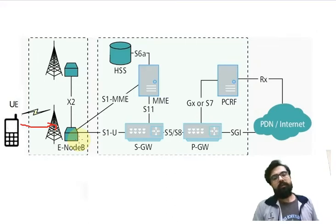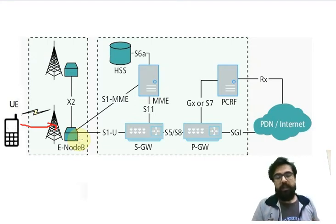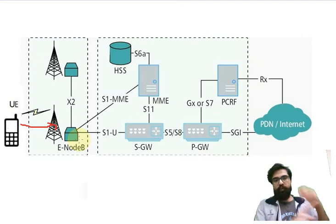For example, a home Wi-Fi router uses a polling system. There are users and the home Wi-Fi says, 'You can use the net now, it's your time, now it's your time,' and so on.